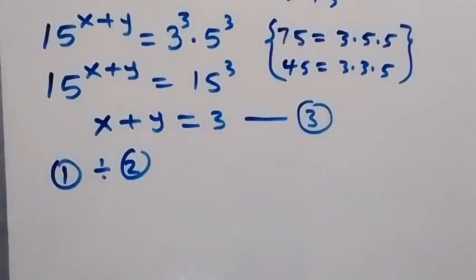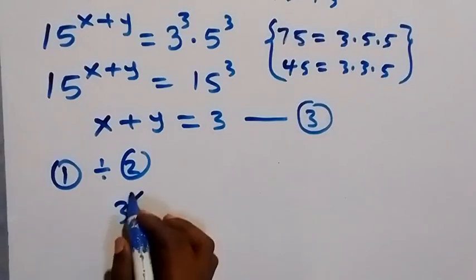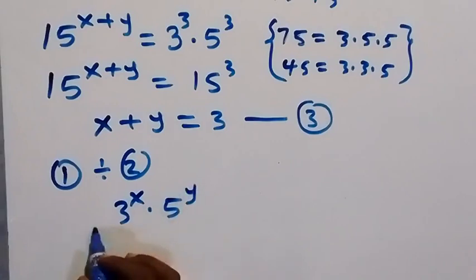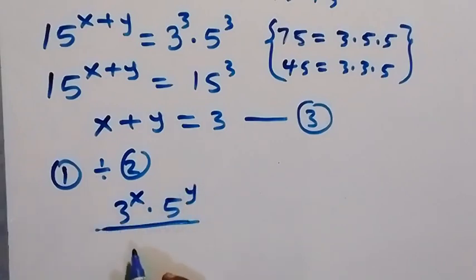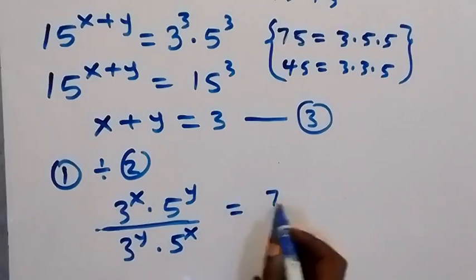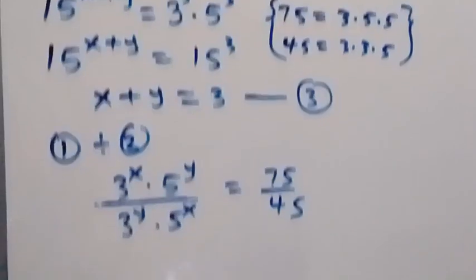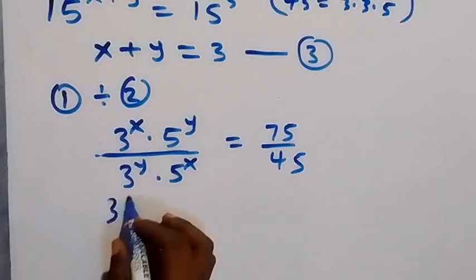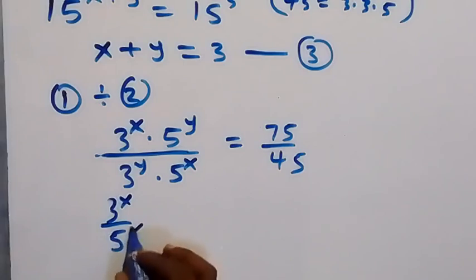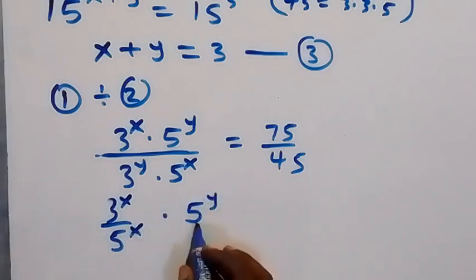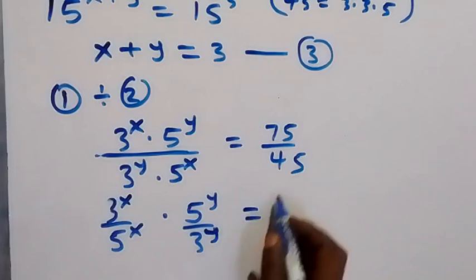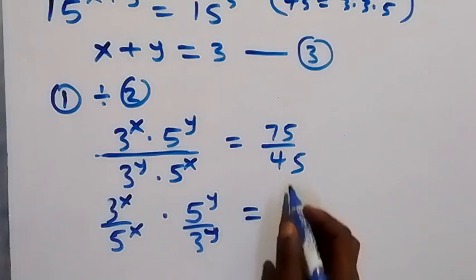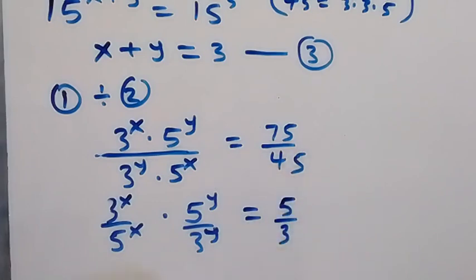From equation 1 we have 3 raised to power x times 5 raised to power y on the left-hand side, divided by equation 2 which has 3 raised to power y times 5 raised to power x, equals 75 divided by 45. We separate the powers of x together and powers of y together: 3 raised to power x over 5 raised to power x, times 5 raised to power y over 3 raised to power y. This gives us 5 over 3 on the right-hand side when we reduce the fraction.